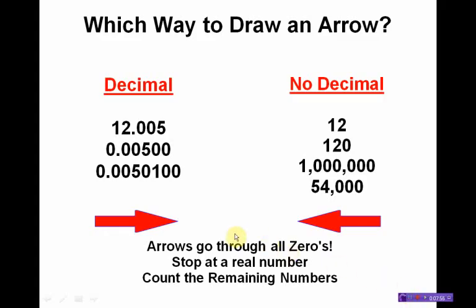In closing: any time I have a decimal point, my arrow goes from left to right, going through all the zeros, stopping at a real number, and counting the remaining numbers. When I don't have decimal places, I come in from the right, go through the zeros, and count the remaining numbers. If you just train yourself to do that, significant figures will not be a problem at all.